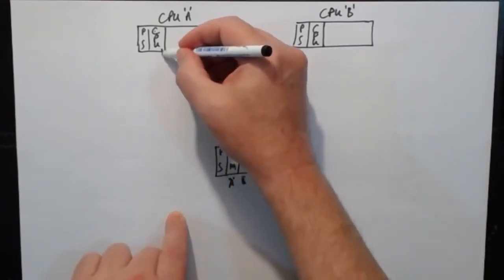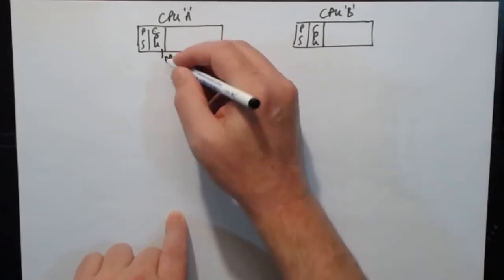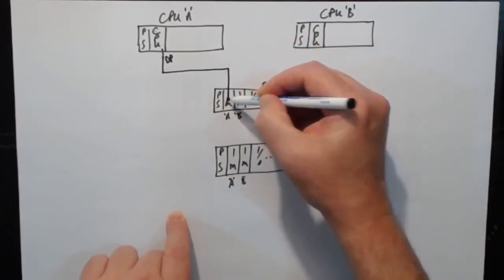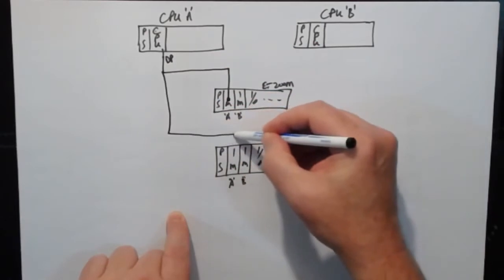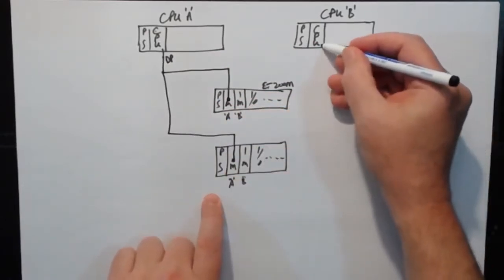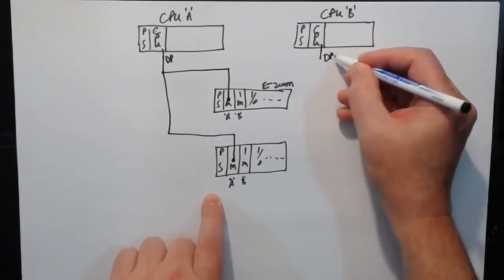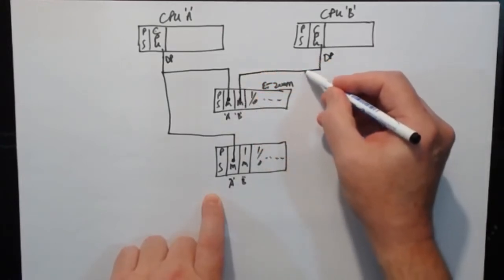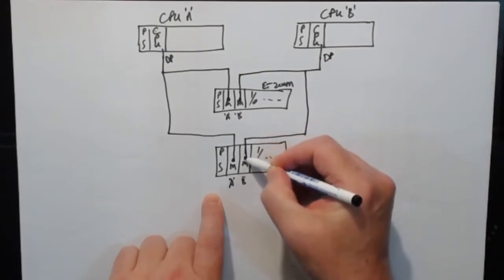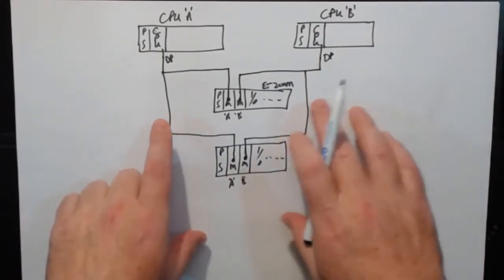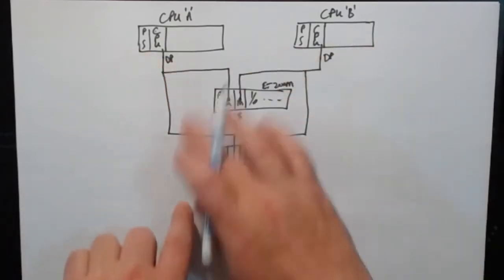The CPU's got Profibus DP connection and it connects to the interface module A on the first rack and interface module A on the second and subsequent racks. CPU B also got Profibus DP connection and it connects to the B interface module on all the racks. The hardware configuration of these two PLCs will be identical for this hardware.